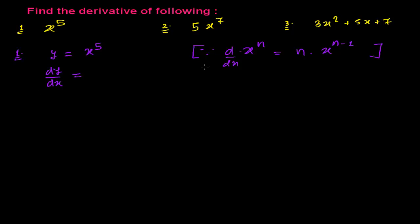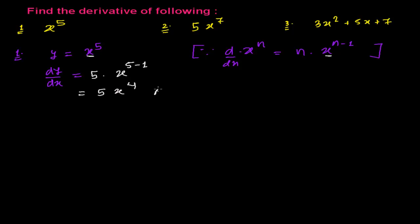Applying the power rule here: n is 5, so I write 5 first, then the base x, to the power 5 minus 1. Compare: x to the power 5 matches x to the power n, so it's power times base to the power n minus 1. Similarly, power times base to the power minus 1.